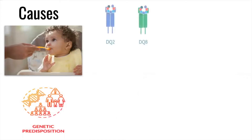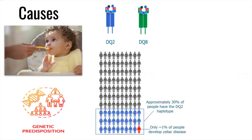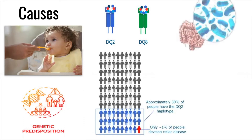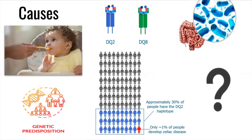The DQ2 and DQ8 gene alleles predispose a person to celiac, and around 1% of people with at least one of these two gene copies will develop the disease. Experts believe that experiencing a higher number of digestive tract infections early in life may increase the likelihood of developing celiac disease. Much is still unknown about possible environmental causes.